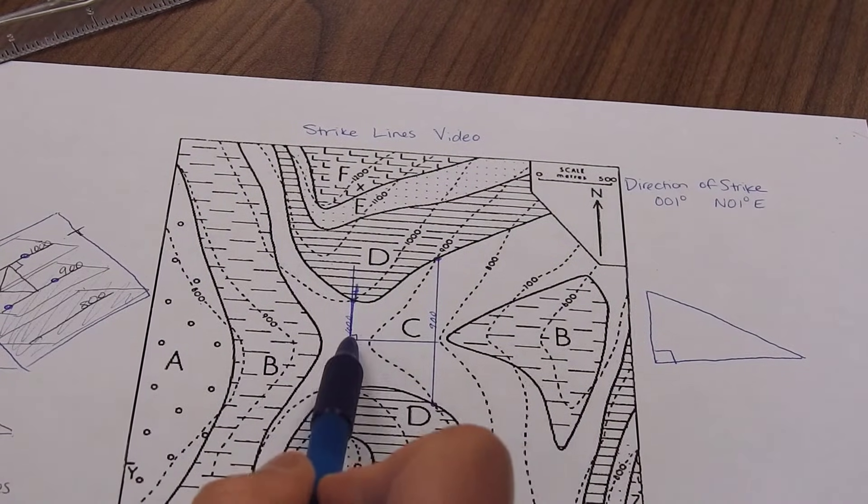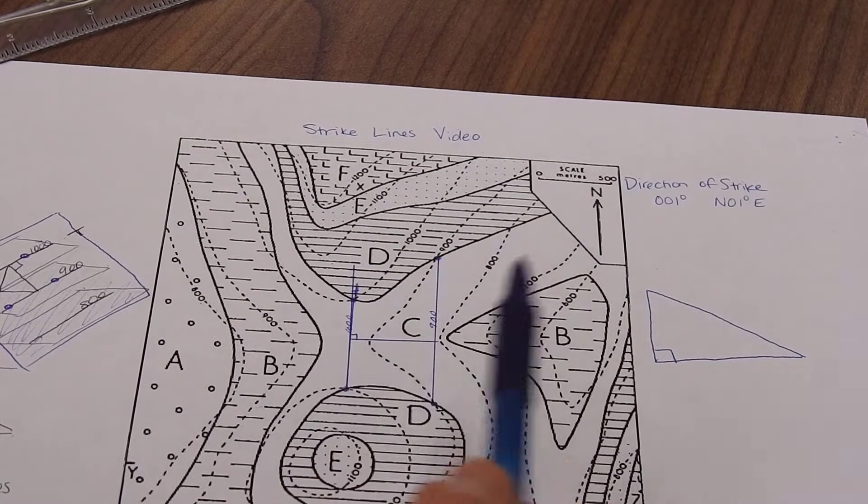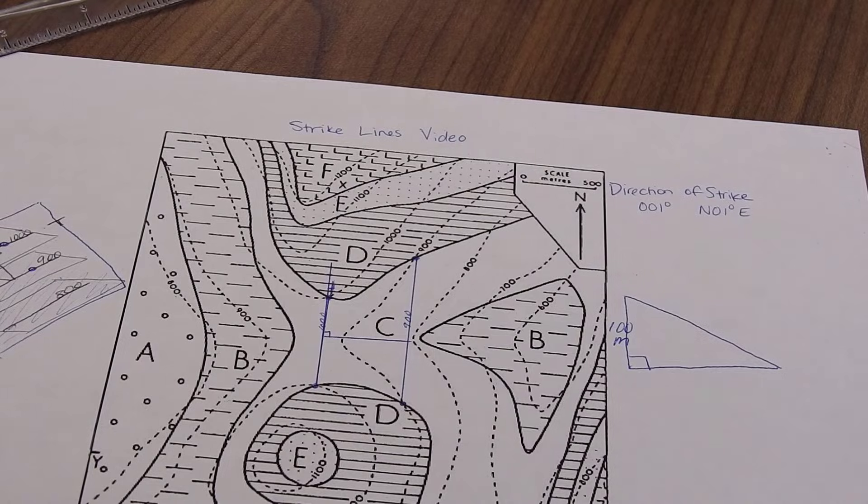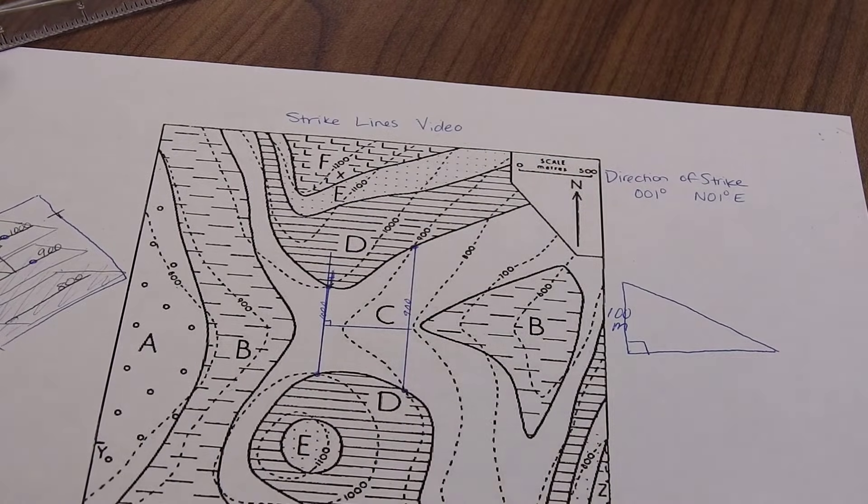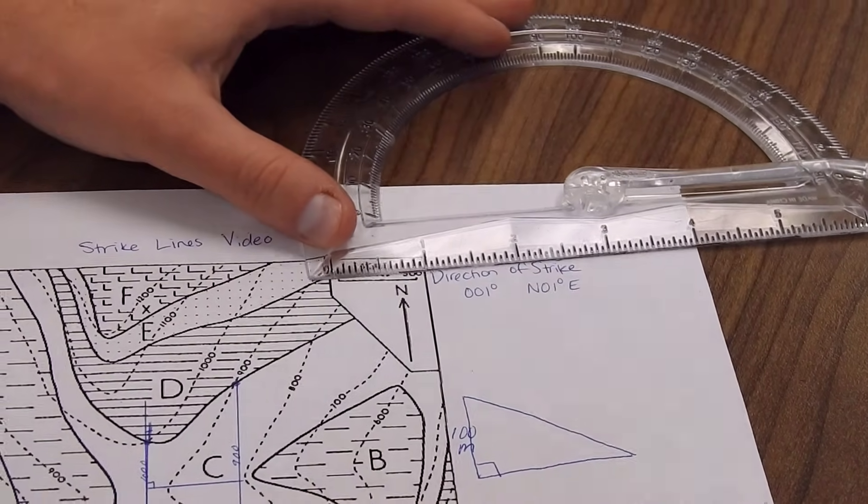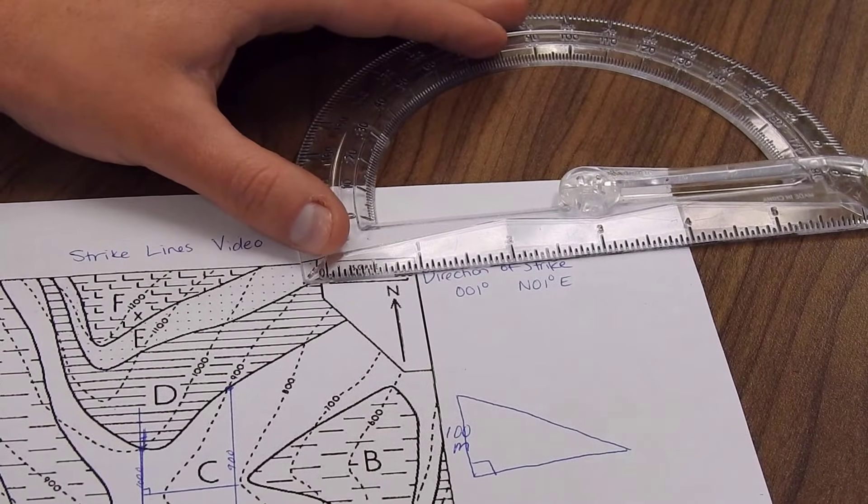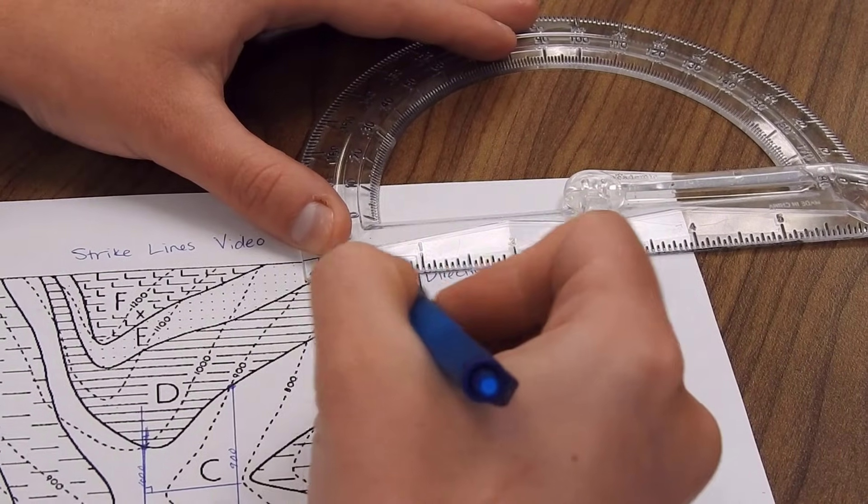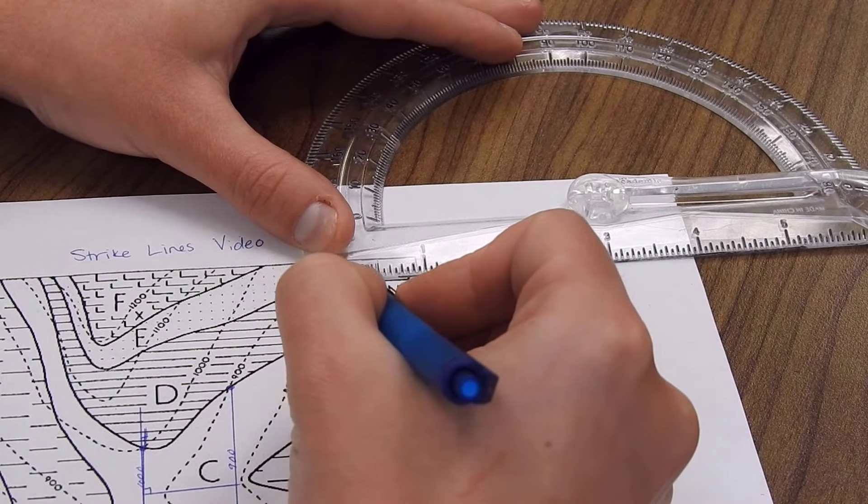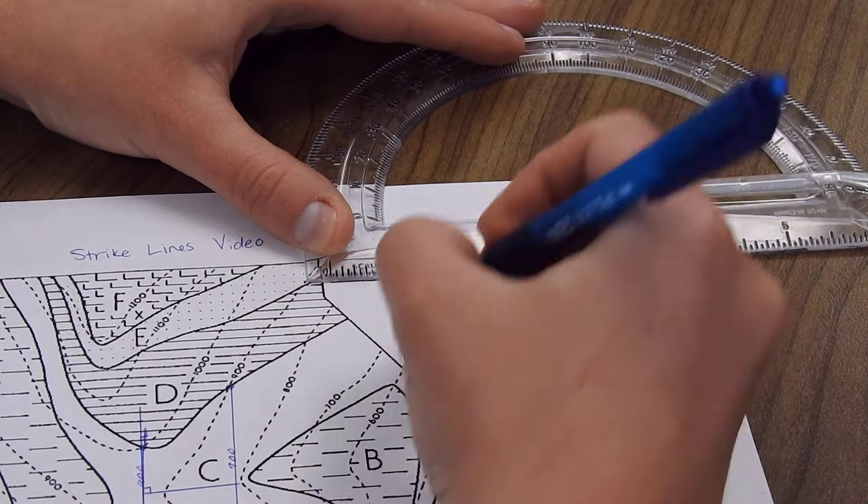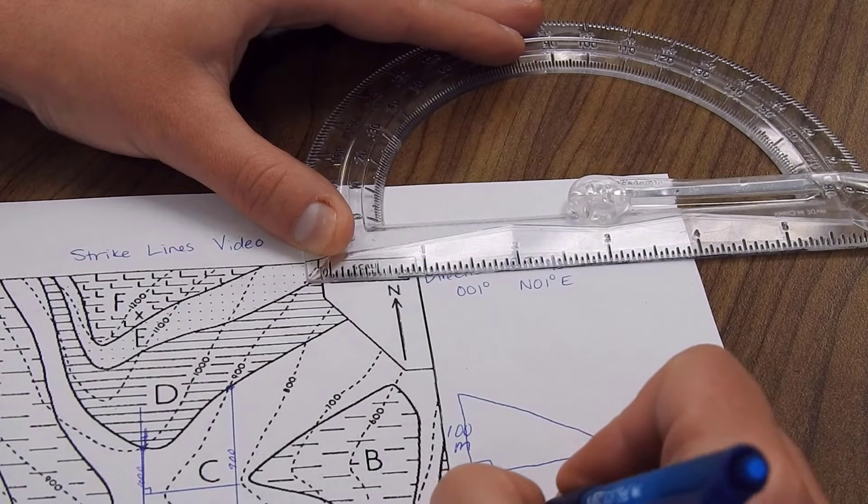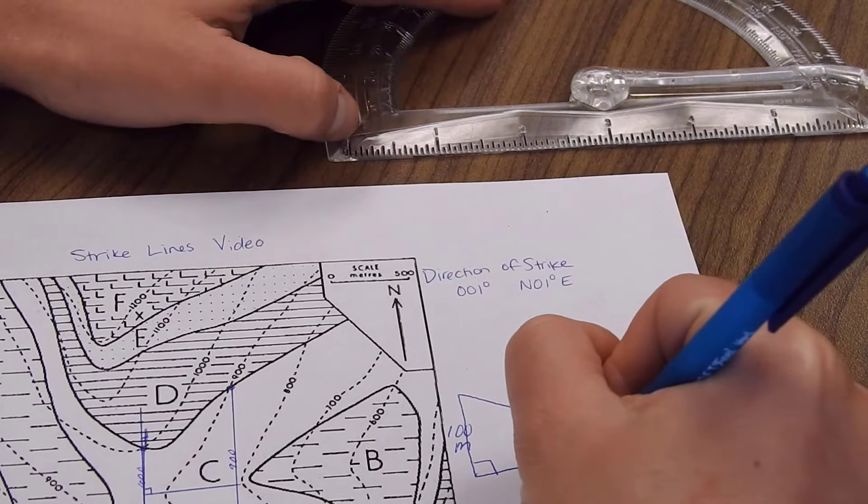The difference in height between those two strike lines, 1,000 minus 900, was 100 meters. And now we're going to need a scale to find the horizontal distance. So I'm going to come up here to my scale and I'm going to find, I'm using a ruler with inches on it because I could not find my centimeter ruler today. And I get 13 sixteenths of an inch is 500 meters.